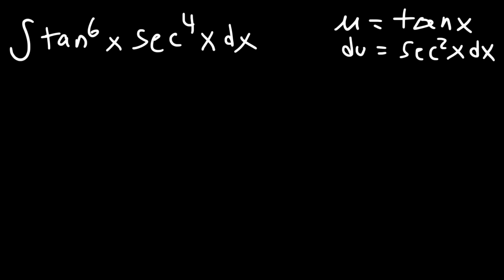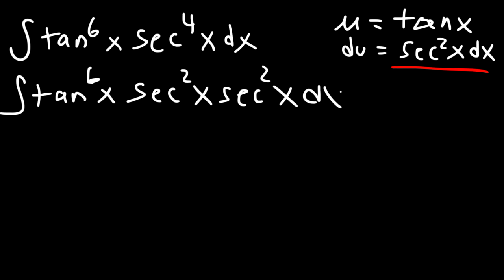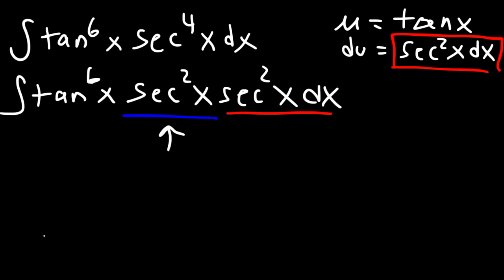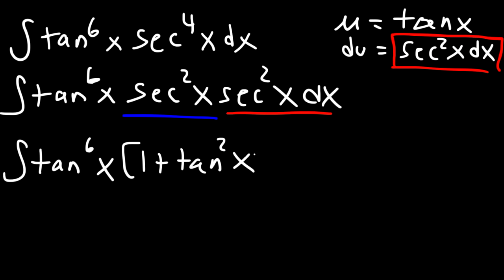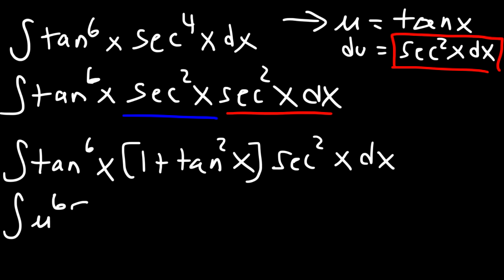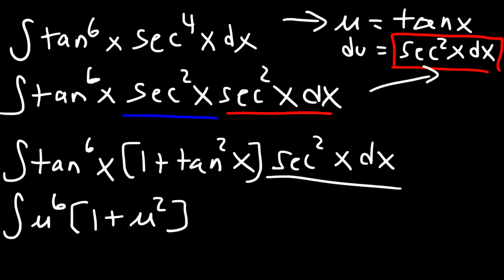The secant squared from du will disappear, but we have secant to the fourth. So we need to split secant to the fourth into secant squared times secant squared. The secant squared dx portion we'll replace with du. But we still need to get rid of the remaining secant squared. Recall that secant squared equals 1 plus tan squared, so let's replace that secant squared with 1 plus tan squared. Now at this point we can substitute everywhere we see a tangent with u, and wherever we see secant squared dx we replace with du.